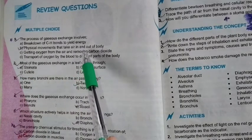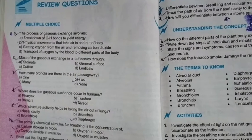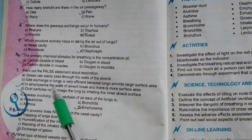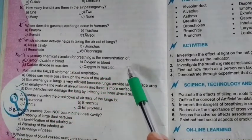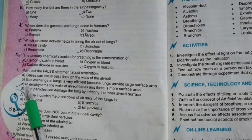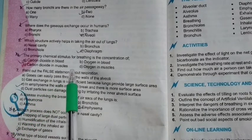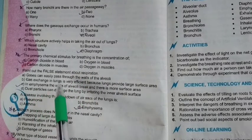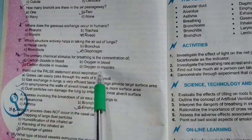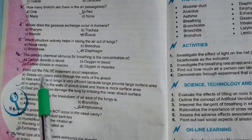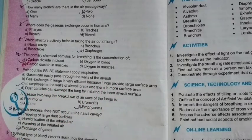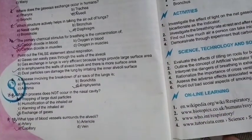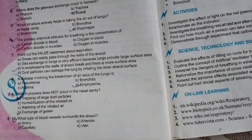MCQ number 6: the primary chemical stimulus for breathing is the concentration of — option A: carbon dioxide in the blood; option B: oxygen in the blood; option C: carbon dioxide in the muscles; option D: oxygen in the muscles. The correct answer given is carbon dioxide in the muscles.